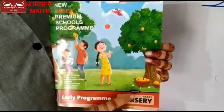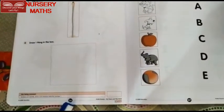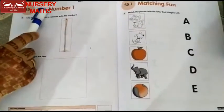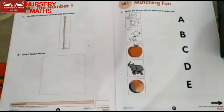Now, workbook time. Volume 2. Open the page. Page number 36. S5, The number 1. Our first question is: use different colors to rainbow write the number 1. हमको rainbow write करना है, number 1 को.